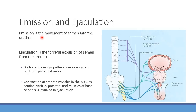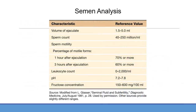Emission is the actual movement of semen into the urethra, and ejaculation is that forceful expulsion of semen from the urethra. Both of these are under sympathetic nervous system control and are maintained through the pudendal nerve — remember we saw the pudendal nerve controlling the external urethral sphincter. Basically you have contraction of the smooth muscles in the tubules in a coordinated peristaltic effect in the right direction. The smooth muscles of the tubules, seminal vesicle, and prostate all contract at the same time in concert to allow ejaculation to occur.